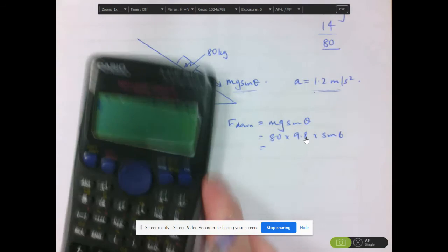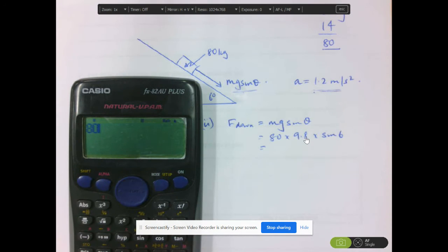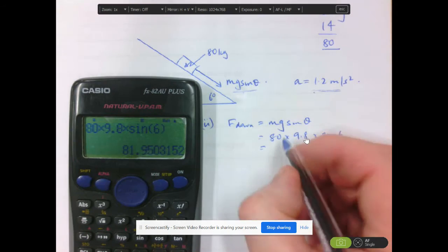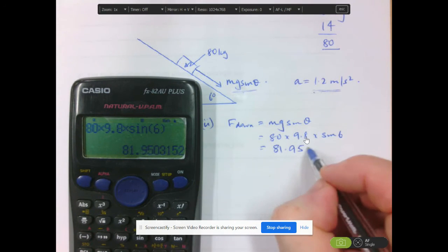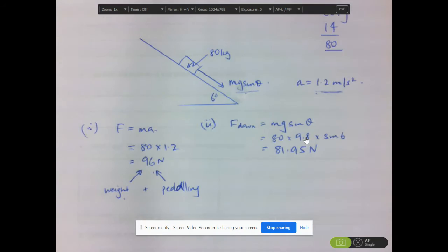Let's work that out. So 80 times 9.8 times sine 6. That's 81.95 newtons. So that's the force going down the page.